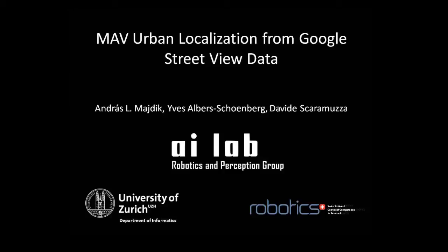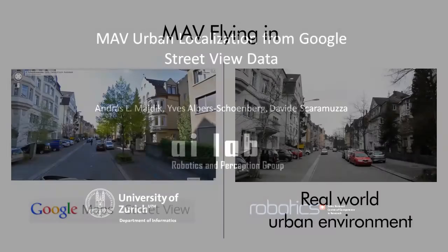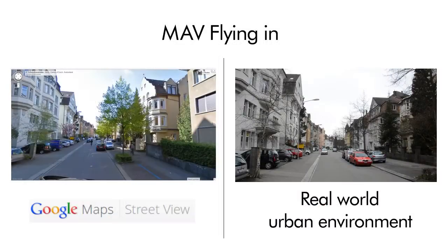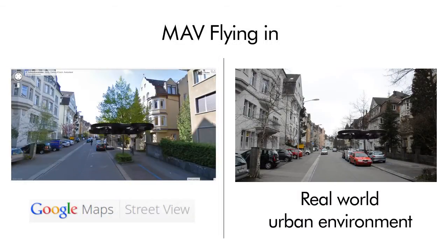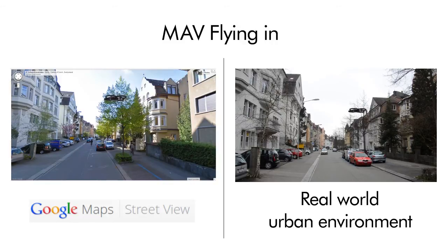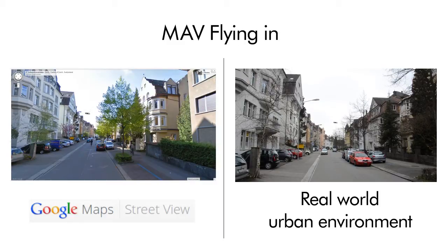This video demonstration tackles the problem of globally localizing a camera-equipped micro aerial vehicle (MAV) flying within urban environments, as seen on the right side, for which a Google Street View image database exists, as seen on the left side. The motivation of this work is to enhance vision-driven localization techniques for MAVs flying in urban areas where the GPS signal is not reliable or partially unavailable.